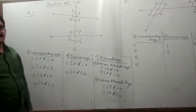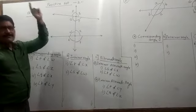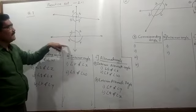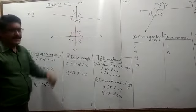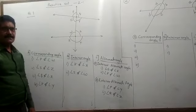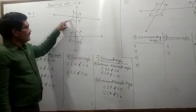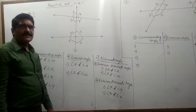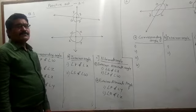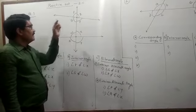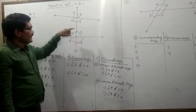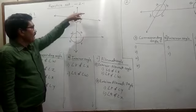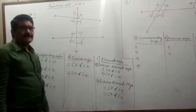Let me recap all the angle pairs. The corresponding angles are: angle P and angle W, angle S and angle Z, angle Q and angle X, angle R and angle Y. The interior angles are: angle R and angle X, and angle S and angle W. The interior alternate angles are: angle S and angle X, and angle R and angle W. The exterior alternate angles are: angle P and angle Y, and angle Q and angle Z.